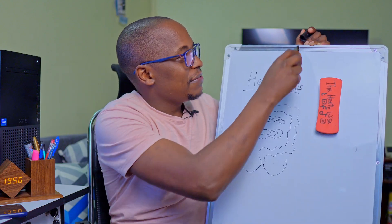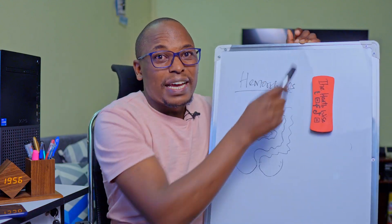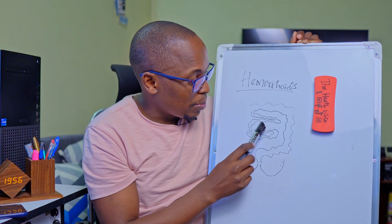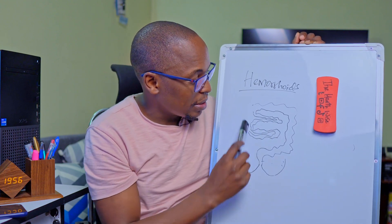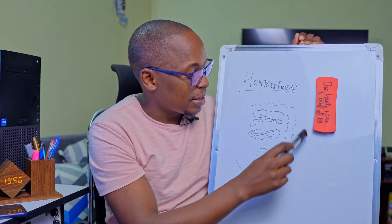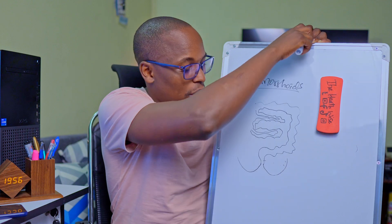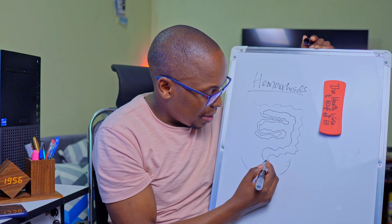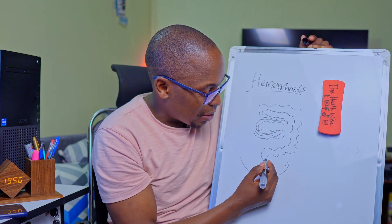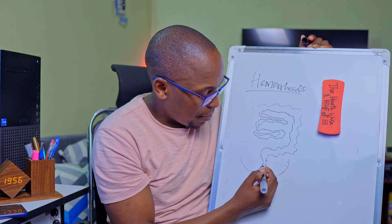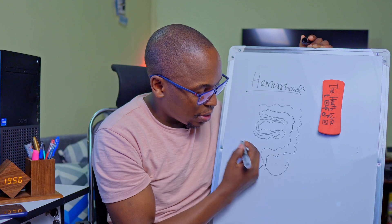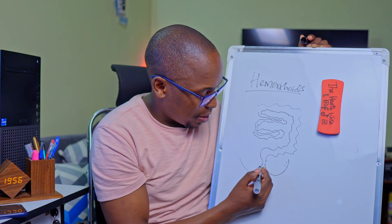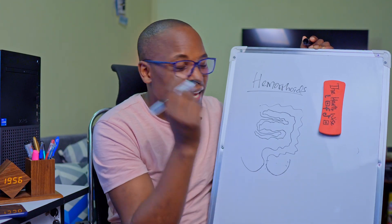This is a very neat diagram of the intestines. These are the small intestines. This is the large intestine, also known as the colon. You can see here, this is the anal opening, and we have our gluteus here.